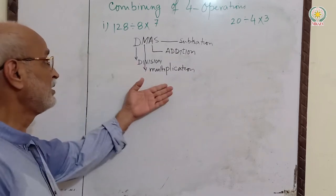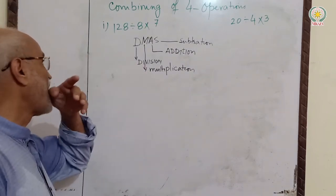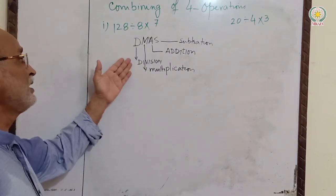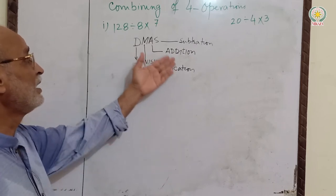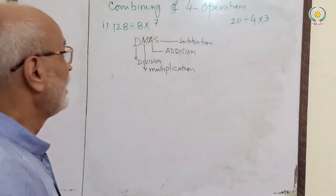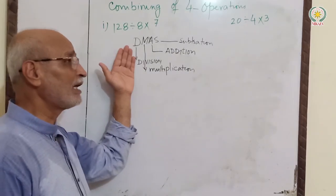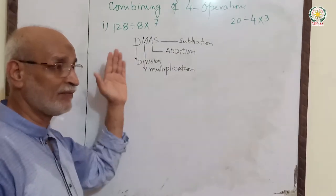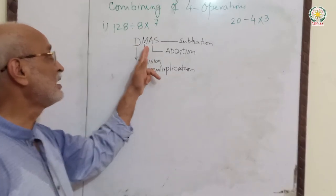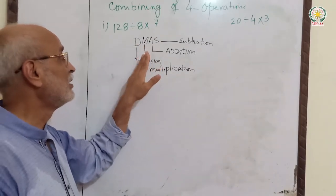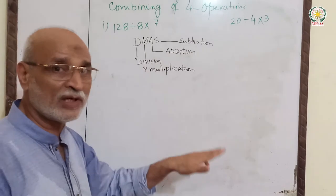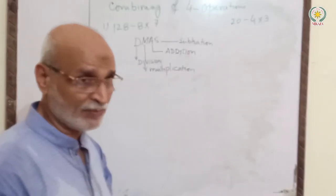When solving problems, we follow the DMAS order. First, division. Second, multiplication. Third, addition. Fourth, subtraction.